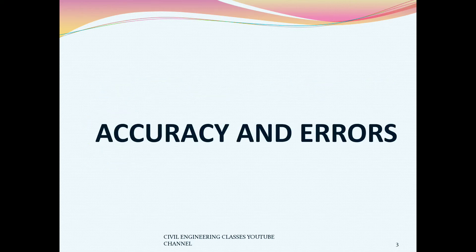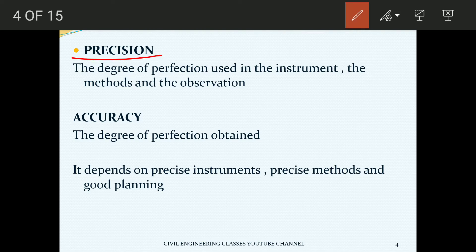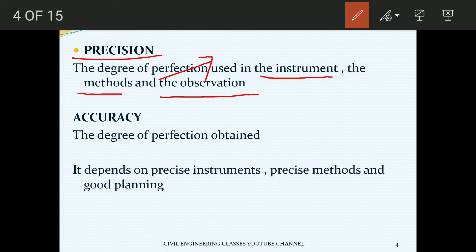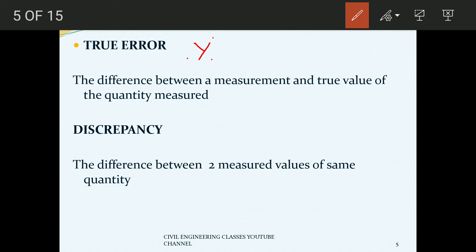The surveying subject covers accuracy and precision as basic concepts. Precision is the degree of perfection used in the instrument, the method, and the observation. The next term is accuracy. Accuracy and precision are often a source of confusion. Accuracy is the difference between the measurement and the true value of a quantity measured.